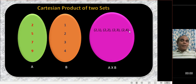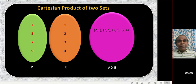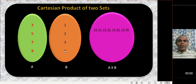The elements of A cross B are different from the elements of A and B individually. The first number is taken from set A and the second number is taken from set B. For example: 2 is paired with 1 giving (2,1), 2 is paired with 2 giving (2,2), then (2,3), (2,4), and similarly (5,1), (5,2).